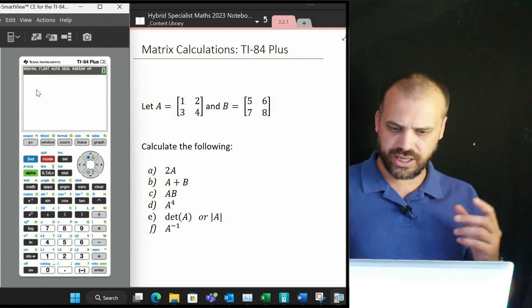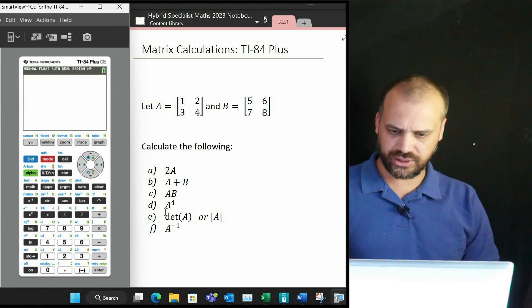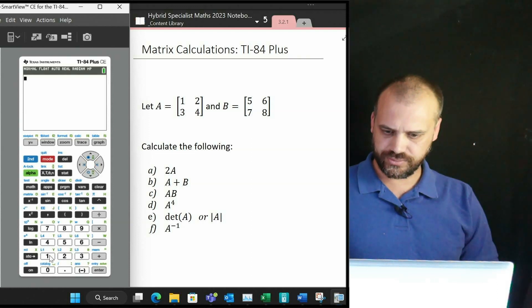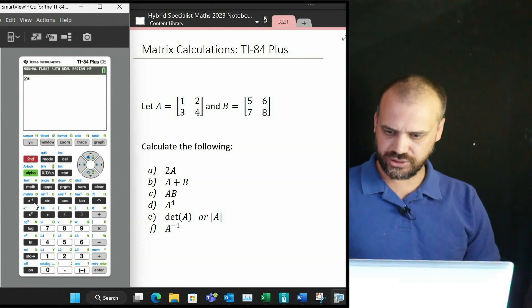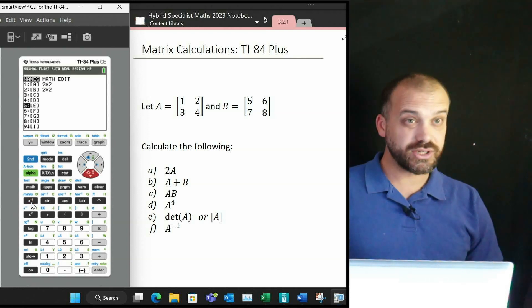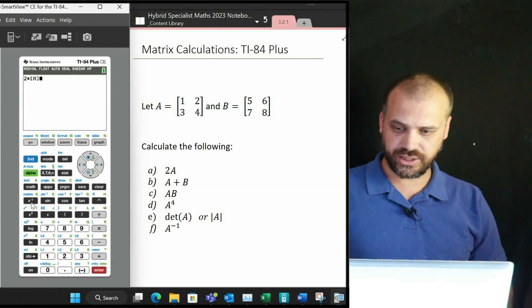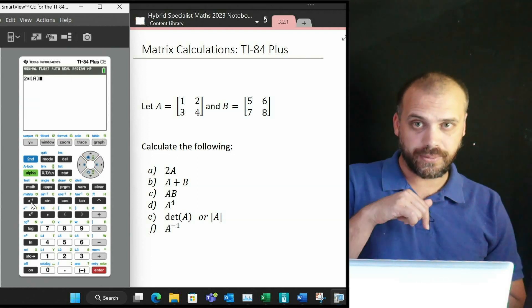I've got two matrices and I want to do these calculations with them. The way to do it: this one's 2 times matrix A, so 2 times, then you go second function matrix, arrow down to the matrix you want A, click enter, and you see that says 2 times A. Done.